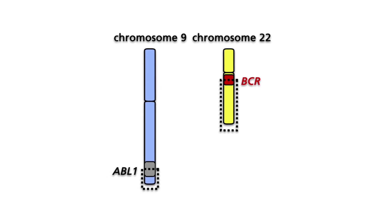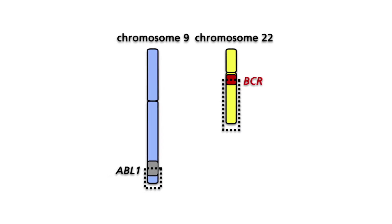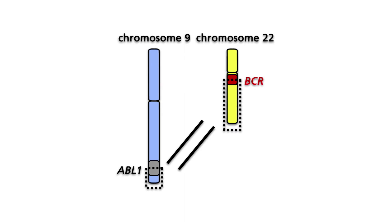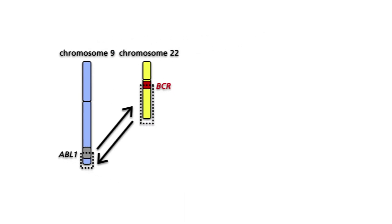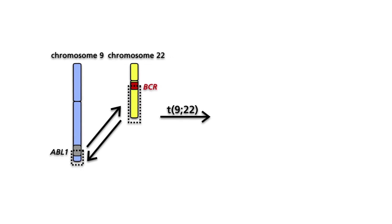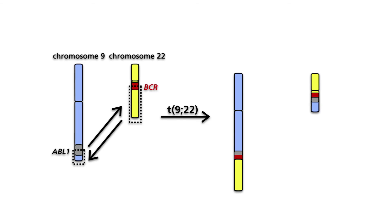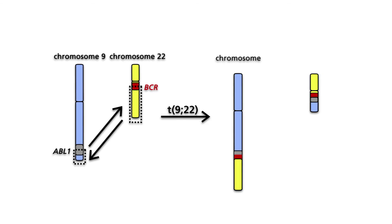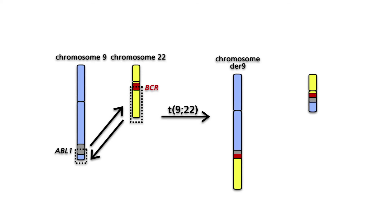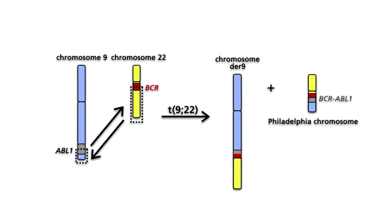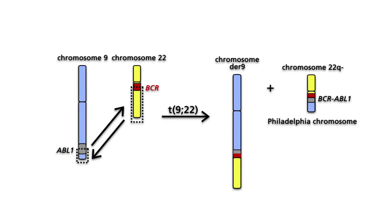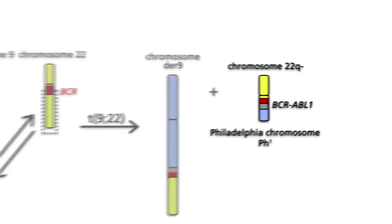Concurrently, a part of the BCR gene together with the long arm of chromosome 22 is translocated to the long arm of chromosome 9. The t(9;22) translocation results in the formation of two new chromosomes: the aberrant chromosome 9Q+, also called DER9 for derivative chromosome 9, and the tiny Philadelphia chromosome 22Q-, also called PH1.